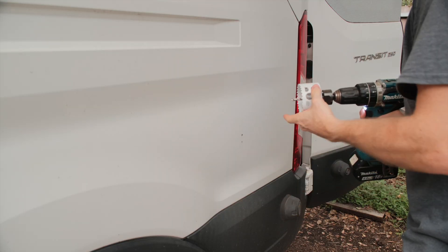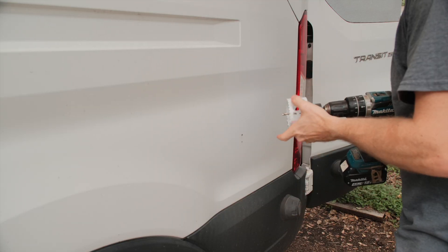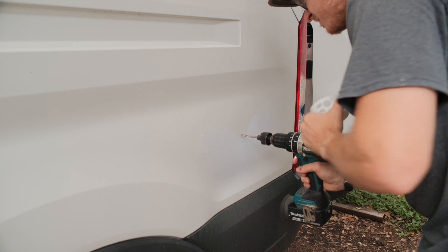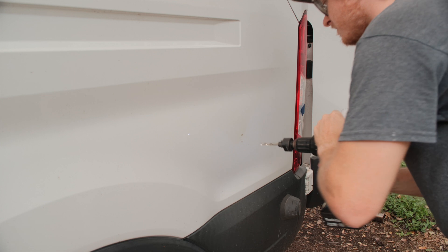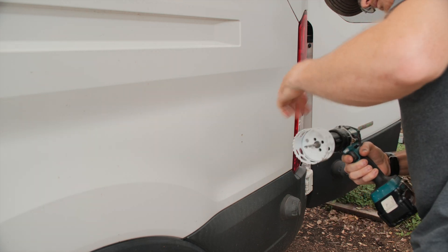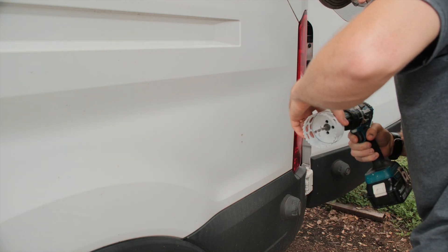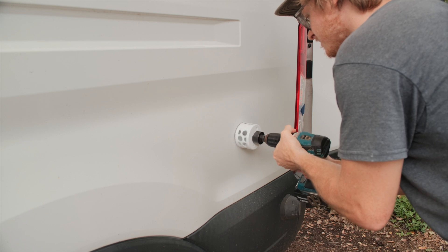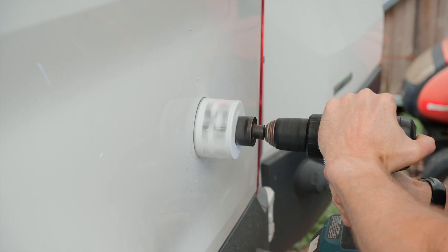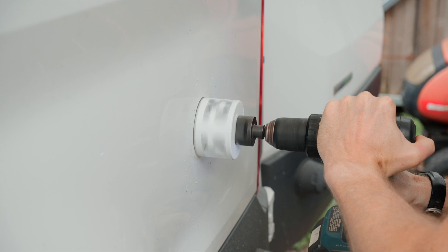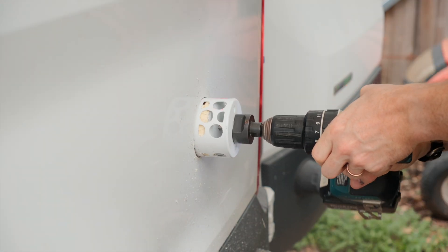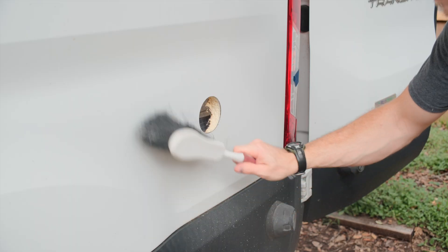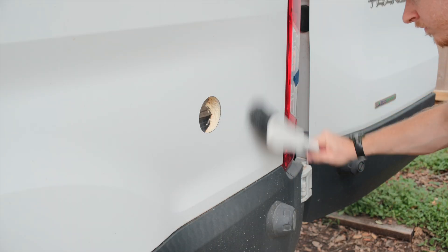The first step to installing the shore power inlet is to drill a hole for it. Pick your location carefully, and be sure the other side is easy to access inside the van. I drilled the pilot hole for my hole saw first, and then added the actual hole saw onto the arbor in order to keep things more controlled as I started drilling. The shore power inlet I'm using requires a 2 and 7/8 inch hole, but I used a 3 inch hole saw, as that's what I had, and it wasn't too big. Double check what size hole your shore power port needs before drilling.